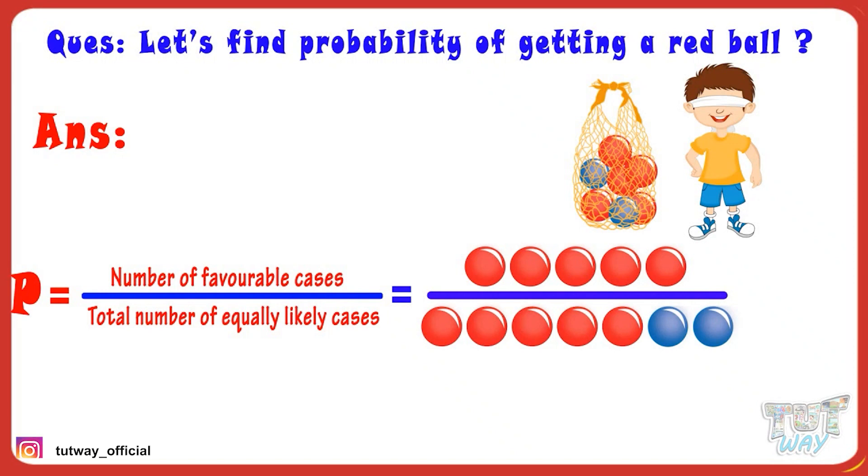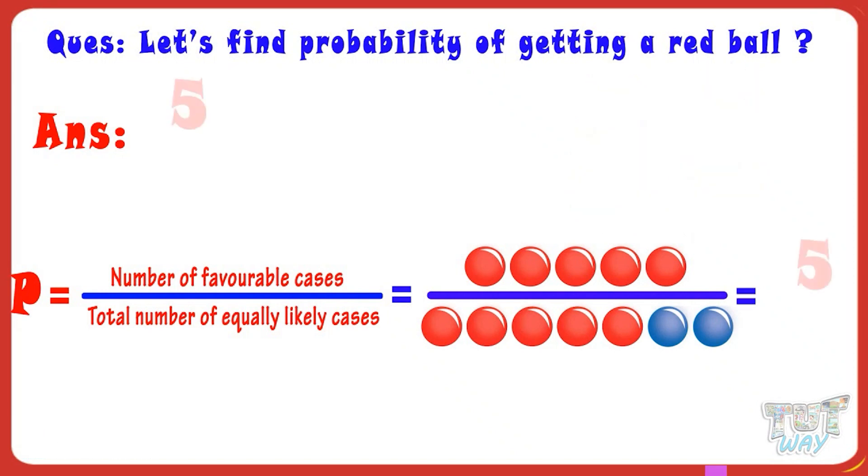So probability of getting a red ball is five by seven.